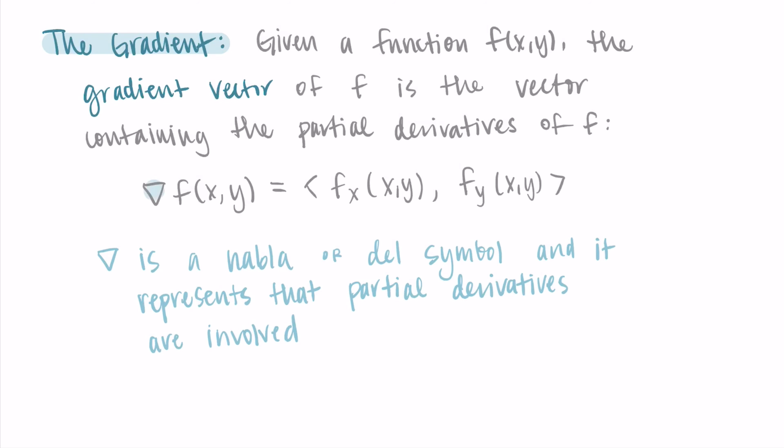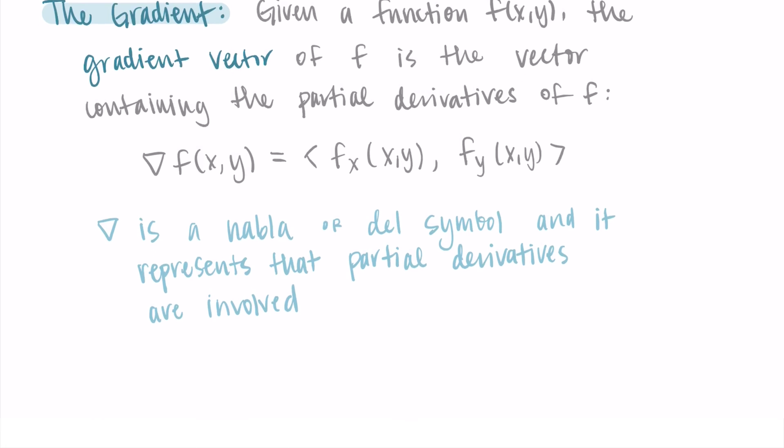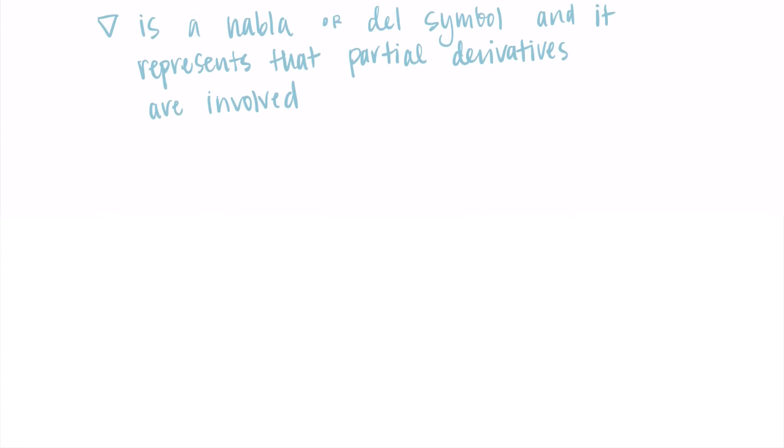If you're reading this out loud, I usually say 'the gradient of f' or 'grad f.' Someone might also say 'del f.' I usually just say 'the gradient of f' or 'grad f.' So here we've done this with just the input variables x and y.